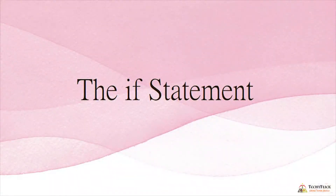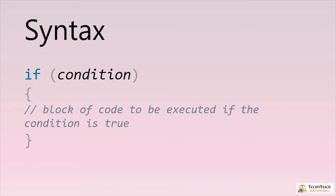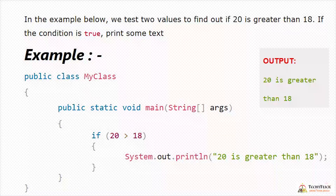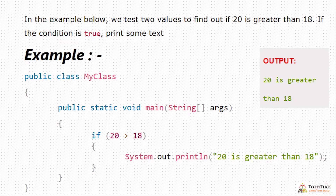The if statement. Syntax: if(condition) — if the condition is true, the particular block of code is executed. For example, we test two values to find out if 20 is greater than 18, and we print and execute that block of code.